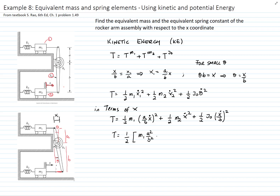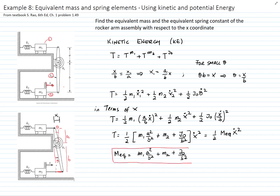We then take out X-dot, which is common to every term. Everything inside the bracket becomes the equivalent mass times X-dot squared. So we can write that the equivalent mass equals M1 times (A squared over B squared) plus M2 plus J_O over B squared. It is important to understand that this equivalent mass applies when we express the kinetic energy with respect to X. If we express it with respect to theta or X1, we will get a different value for the equivalent mass.